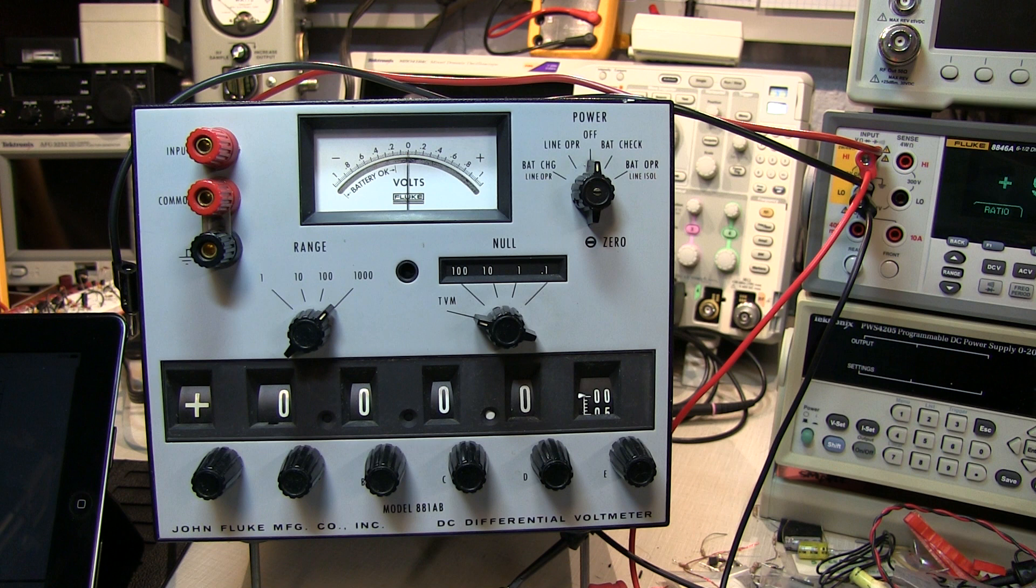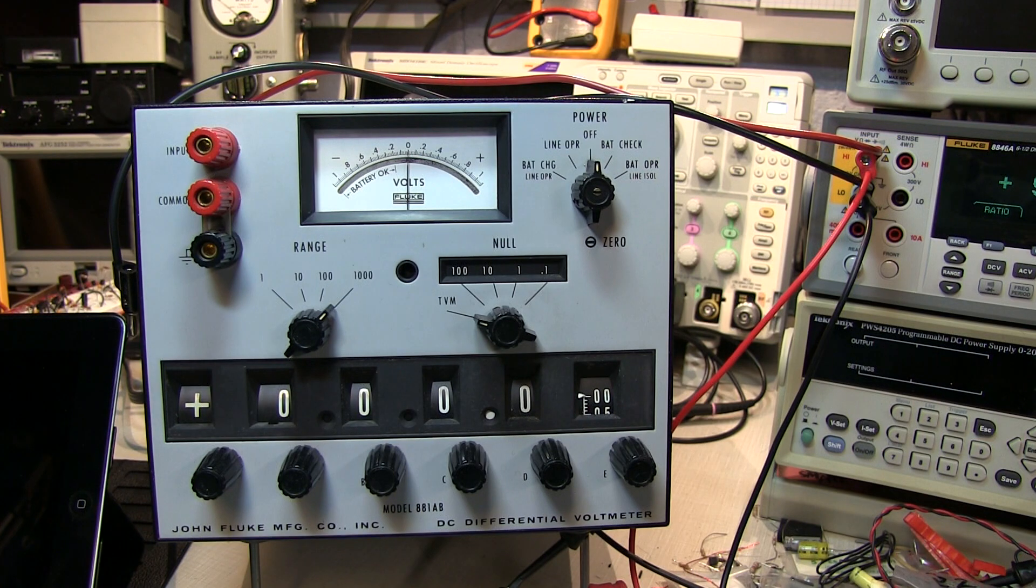If you saw my appearance on the Dinosaur Den with Bill Hurd a few months ago, you already got a glimpse of this piece of equipment. The 881A was produced in the early to mid-60s, making it just a little over 50 years old.